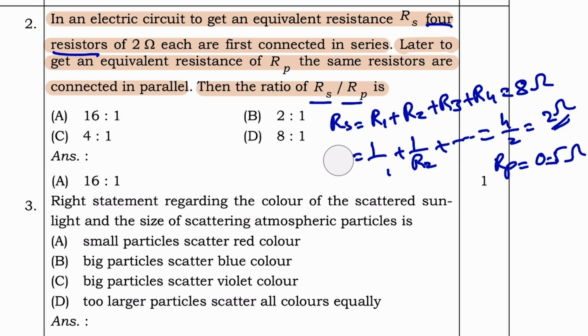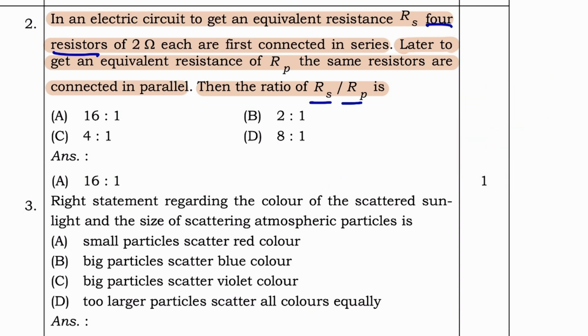Then at last you need to find RS bar RP, which will be 8 by 0.5 and the answer will be 16 by 1, means 16 is to 1. This is the lengthier method. And when we talk about easier method, when they have given equivalent resistance, then the formula for RS bar RP will be N square by 1. N is 4, since there are 4 resistors, so it will be 4 square by 1, which is 16 is to 1. The answer here will be option A.